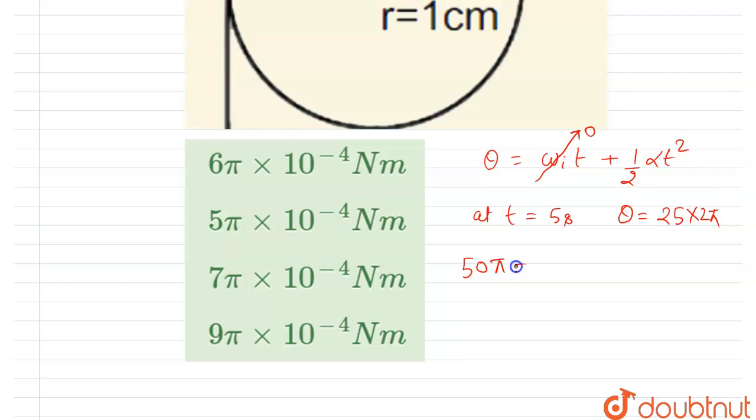will get 50π equals half alpha times 25, right? So this will get cancelled out by 2, and you will get alpha equals 4π radians per second squared. So we got the alpha. Now it is asked in the question: what is the torque required? You already know the torque